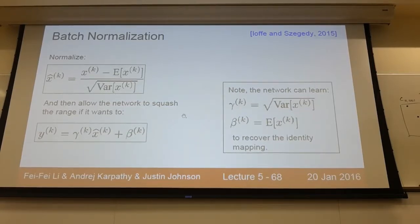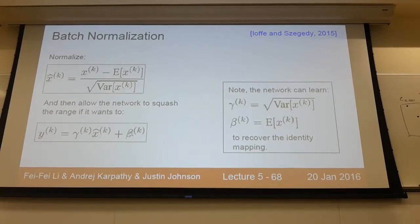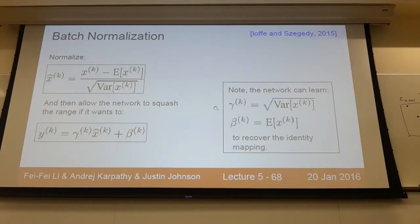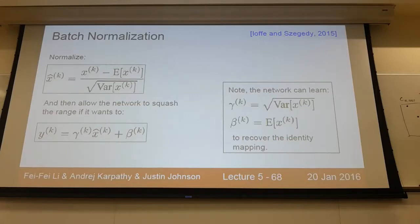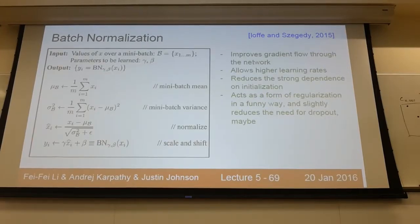This normalization operation is inserted as a layer — a batch normalization layer. It is often used in fully connected layers: you have a fully connected layer, then batch normalization, then a nonlinearity, and so on. At every mini-batch you compute the empirical statistics and normalize. Additionally, after this normalization people introduce extra degrees of freedom: multiply by a learnable constant gamma and add a learnable constant beta — initialized at gamma=1 and beta=0 — and let the optimization process tune them.